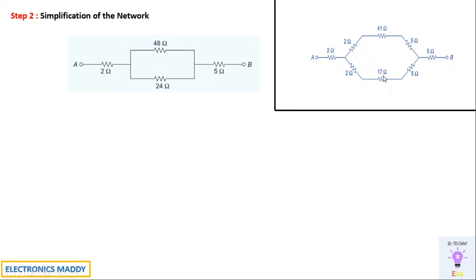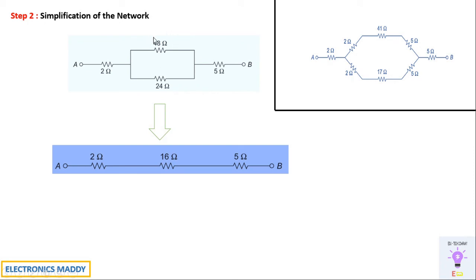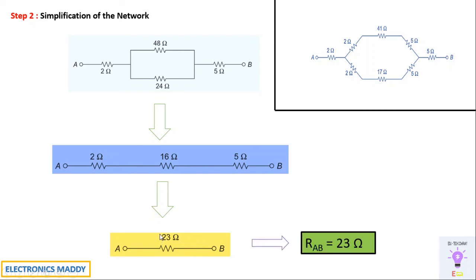In the simplified network, 2 + 41 + 5 = 48 ohms in series on one branch, and 2 + 17 + 5 = 24 ohms in series on another. These two are in parallel: (24 × 48) / (24 + 48) = 16 ohms. Finally, 2 + 16 + 5 = 23 ohms in series. The effective resistance from terminals A to B is 23 ohms.